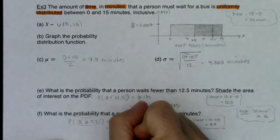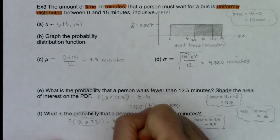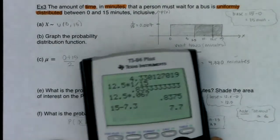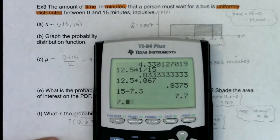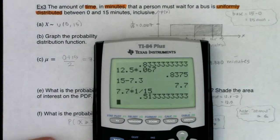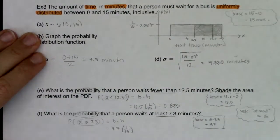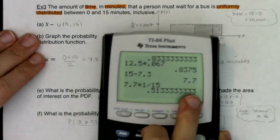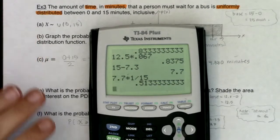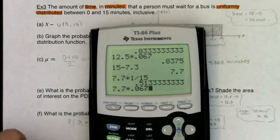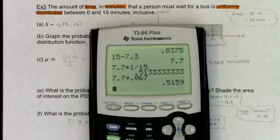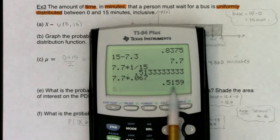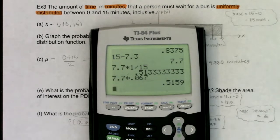My base is high minus low: 15 minus 7.3 equals 7.7. My height is still 1/15. Multiplying 7.7 times 1/15 gives about 51%. If you used the decimal 0.067, you'd get about 52% — pretty similar, still a close answer.